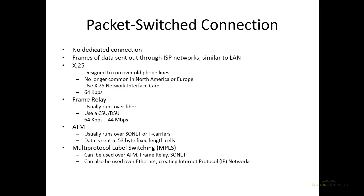Frame relay is another packet switched option, typically run over fiber optic networks today, using a CSU or DSU to connect. Speeds range from 64 kilobits per second all the way up to 44 megabits per second, making it a viable option today. A common choice for wide area networks is ATM, which usually runs over your SONET or fiber optic network, or over T1 or T3 lines. ATM uses a fixed cell that is 53 bytes long to send data, and is a very common option today for WAN connections.